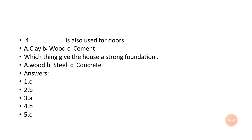Number four: what is also used for doors — option A: clay; option B: wood; option C: cement. Wood is used for making doors, so option B is correct.